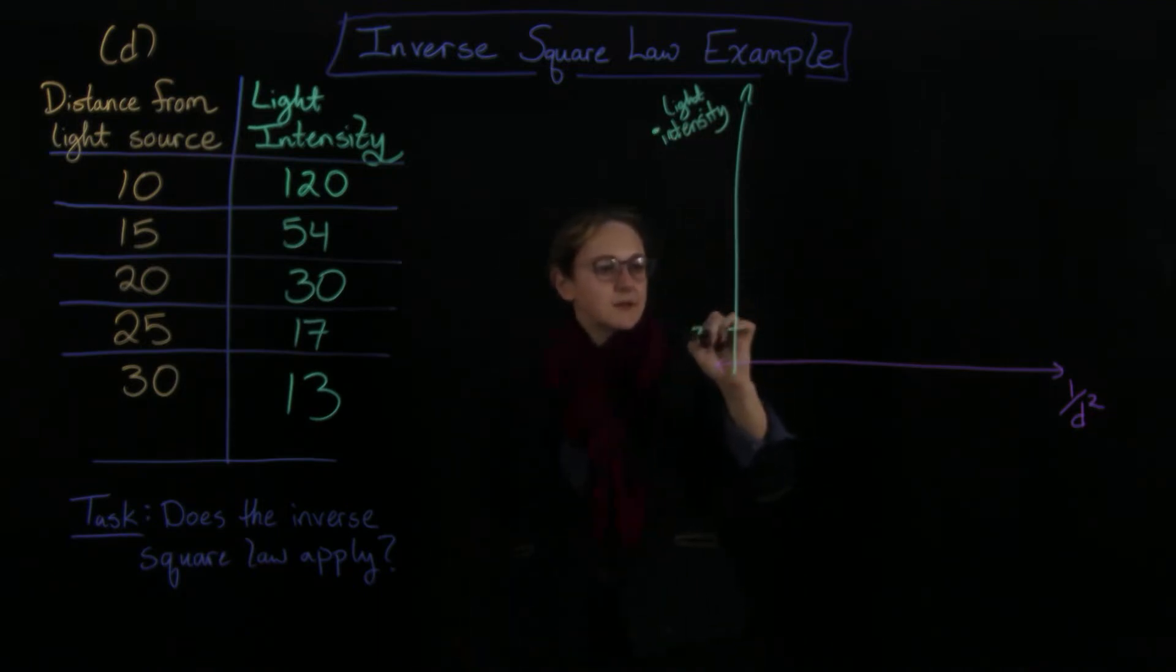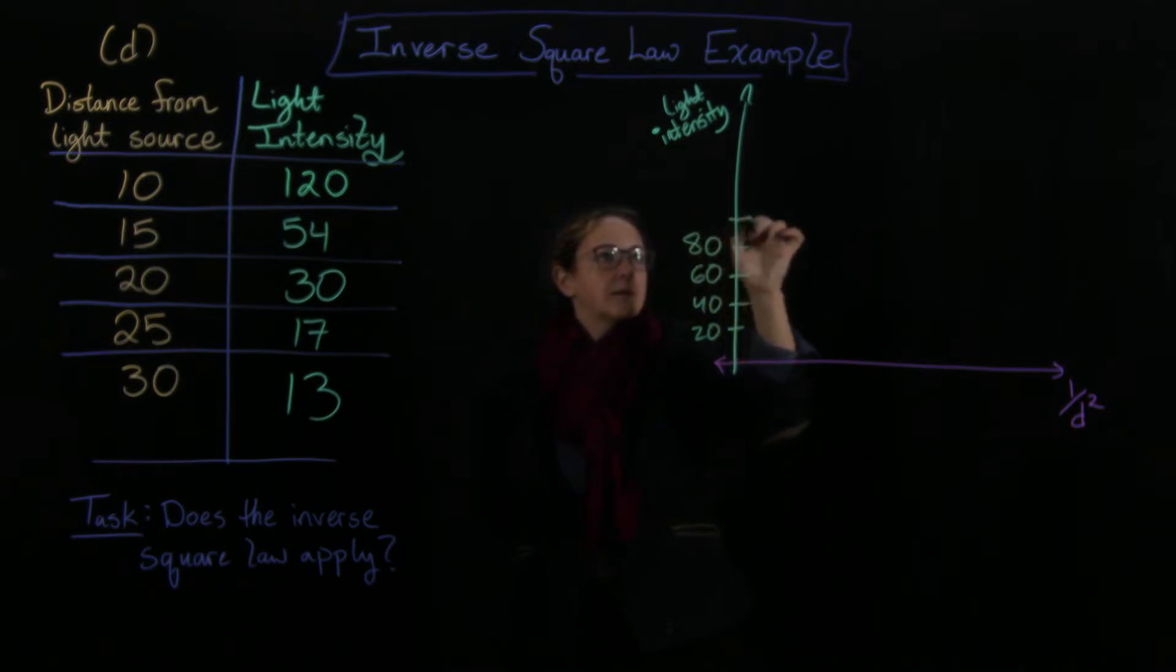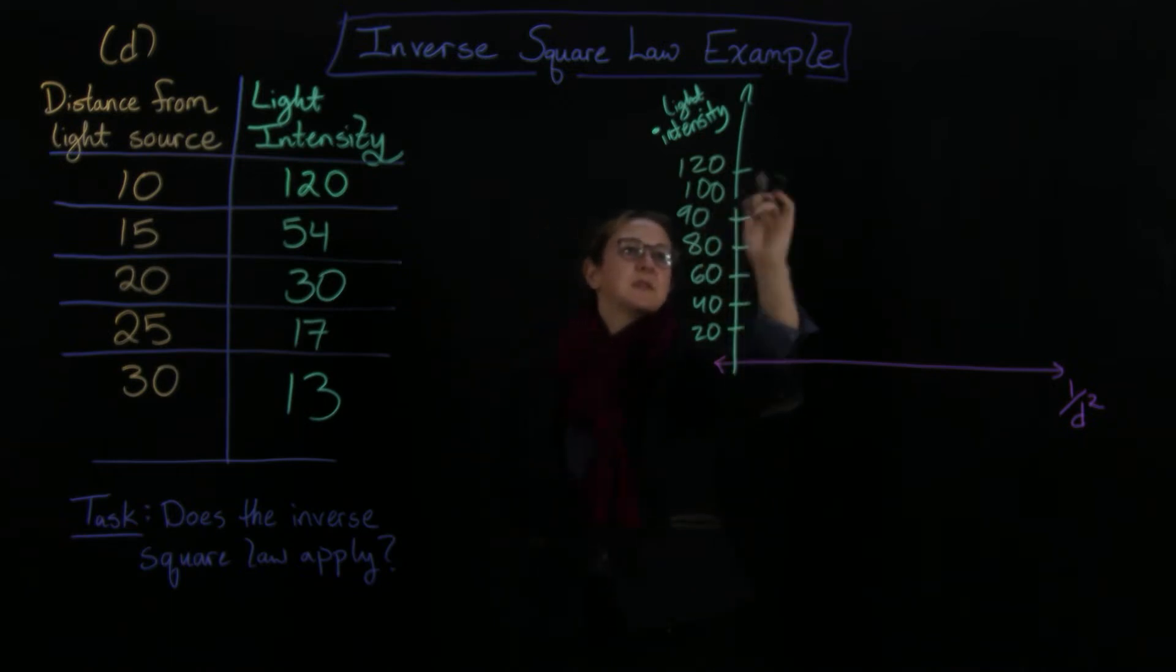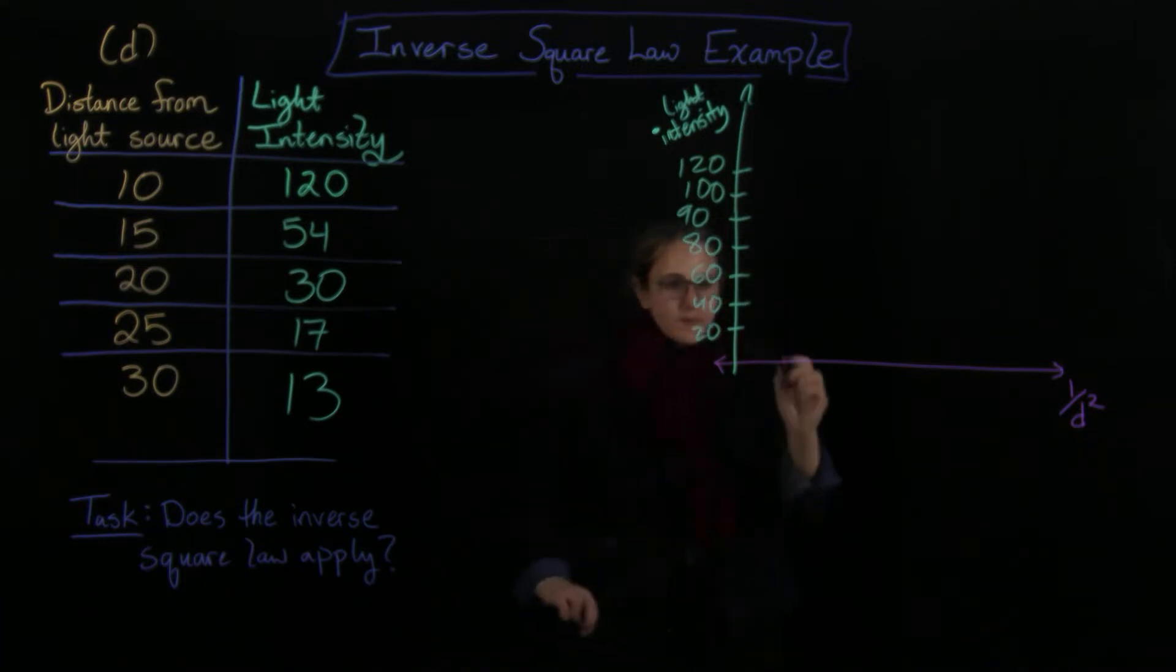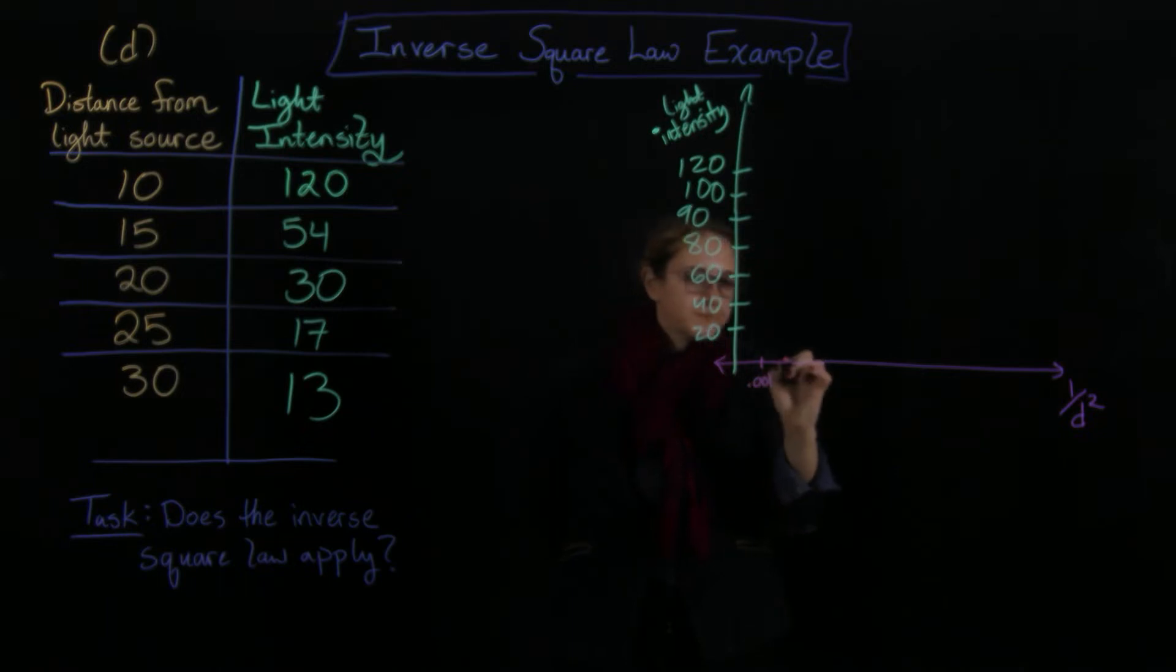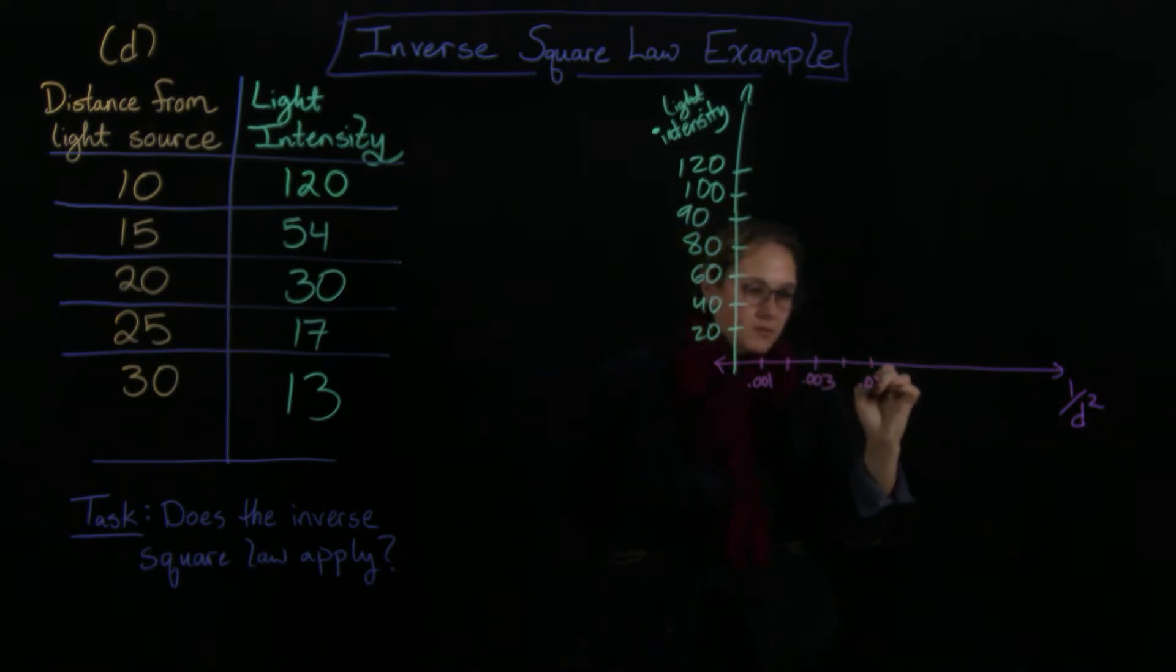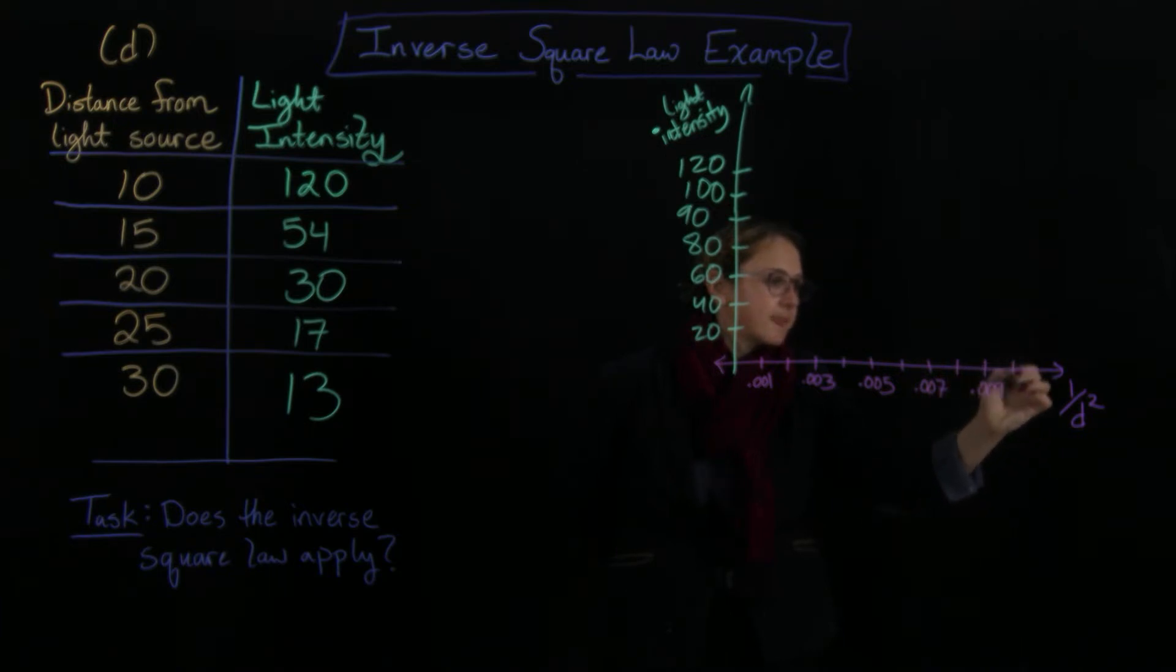So here I have like 20, 40, 60, 80, 90, 100, 120. These are vaguely supposed to be equally spaced. And then similarly, down here I'm going to have 0.001, 0.003, 0.005, 0.007, 0.009, and then 0.01.